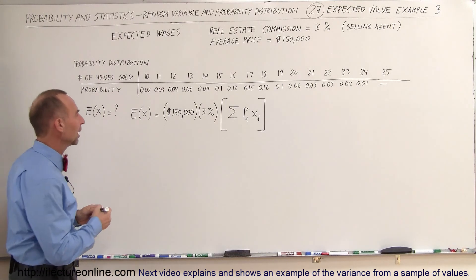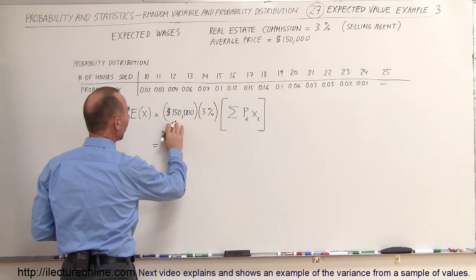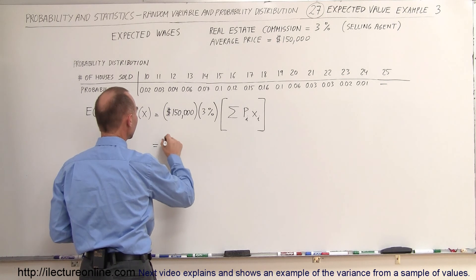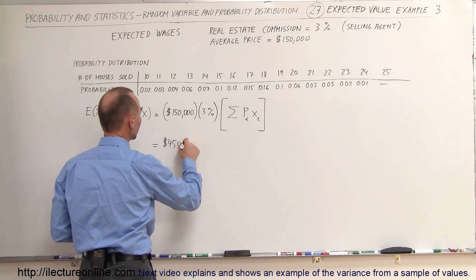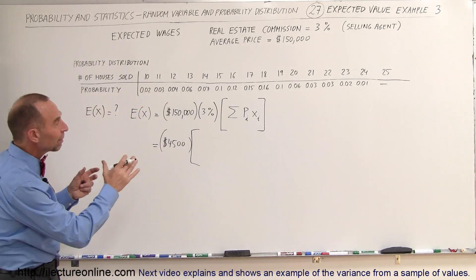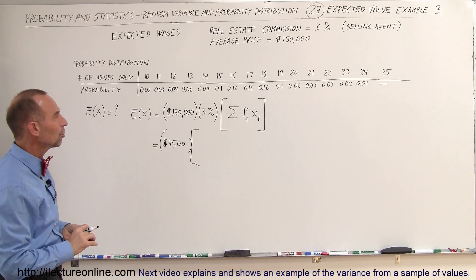And so the way that would then look, this would be equal to 3% of $150,000, that would be $4,500 per home on average, multiply that times, and that would then be the expected value of the number of houses sold based upon the probability distribution.